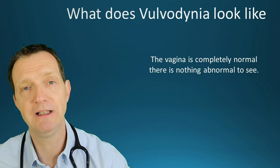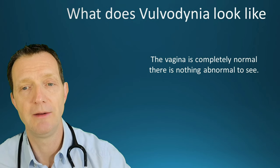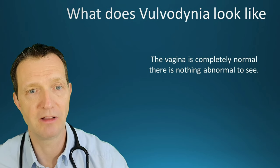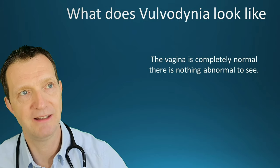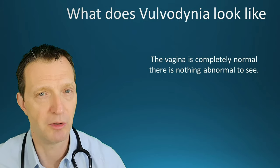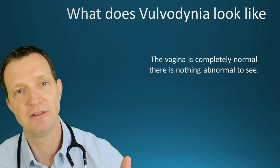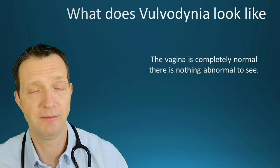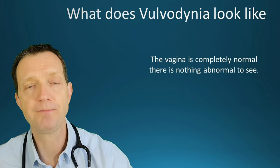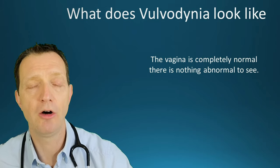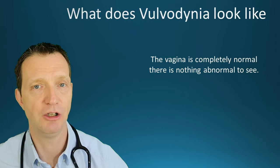What does vulvodynia look like? The vagina is completely normal — there's nothing to see. A lot of people come in thinking they can see a spot or something unusual, but on examination there is absolutely nothing there; it is completely normal.